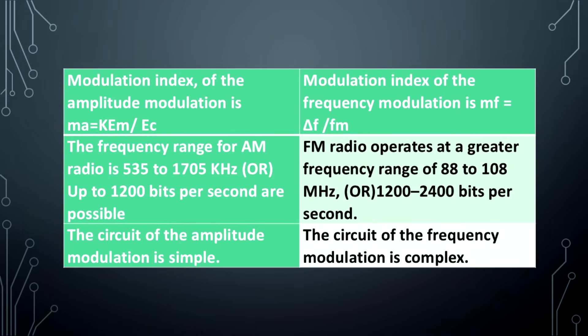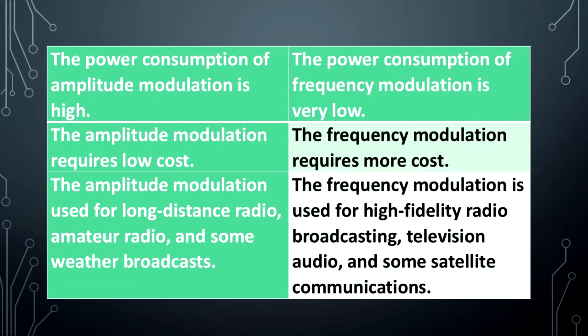The circuit of amplitude modulation is simple; the circuit of frequency modulation is complex. The power consumption of amplitude modulation is high; the power consumption of frequency modulation is very low. Amplitude modulation requires low cost; frequency modulation requires more cost.